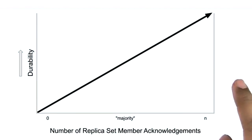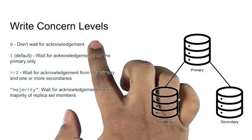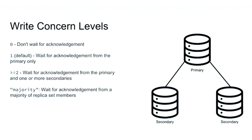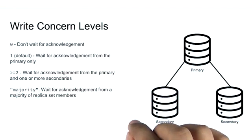Let's go over the available write concern levels. A write concern of zero means that the application doesn't wait for any acknowledgements. The write might succeed or fail. The application doesn't really care.